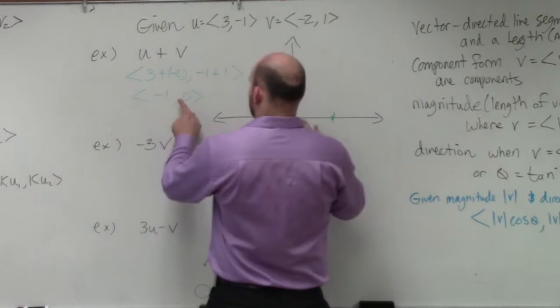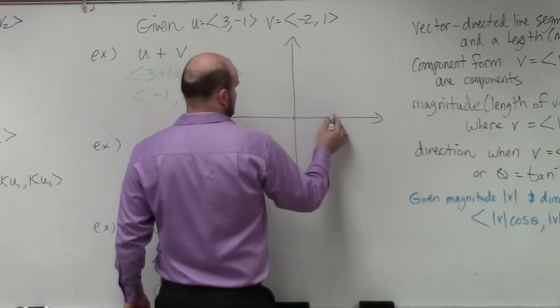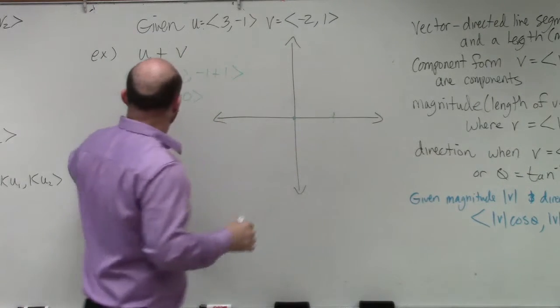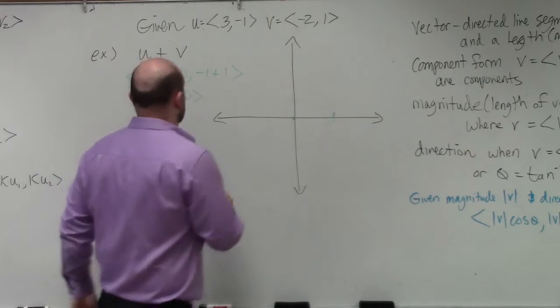Or sorry, negative 1, right? Yeah, negative 1. That's positive 1. I was right. So it's 1 comma 0.